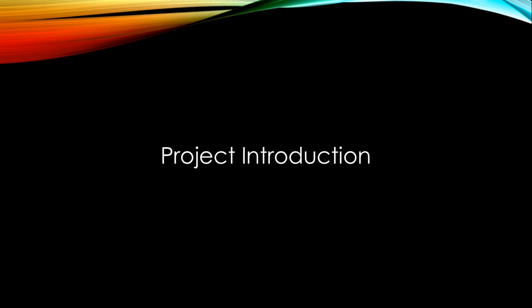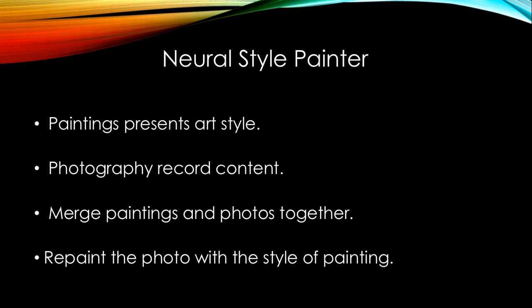Let's see what a Neural Style Painter is. Paintings and photos are two different kinds of images. Painters have their own art styles which can provide unique aesthetic experience to audiences. Photos, on the other hand, record a scene realistically and capture content from real life. What if you want to make a photo look like it is a painting composed by a famous artist, and let the photo have the art style of a famous painting? This is possible with an algorithm presented by a paper called A Neural Algorithm of Artistic Style, which uses machine learning and an artificial neural network to repaint a photo with a similar style of a painting, while preserving the content in the photo.